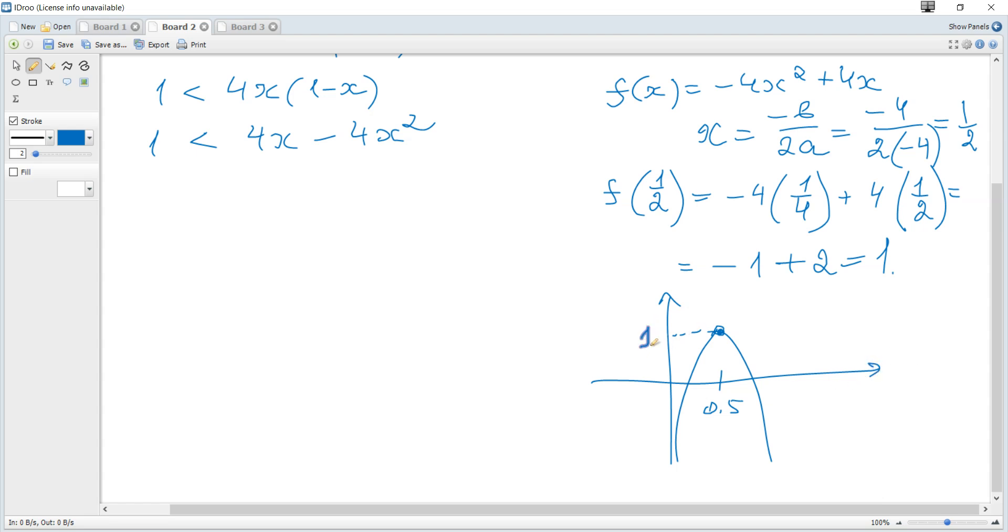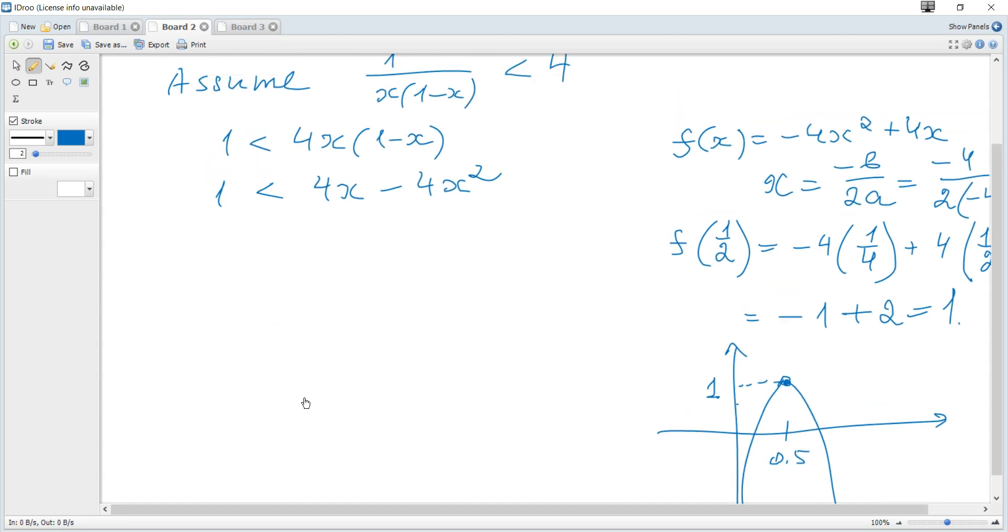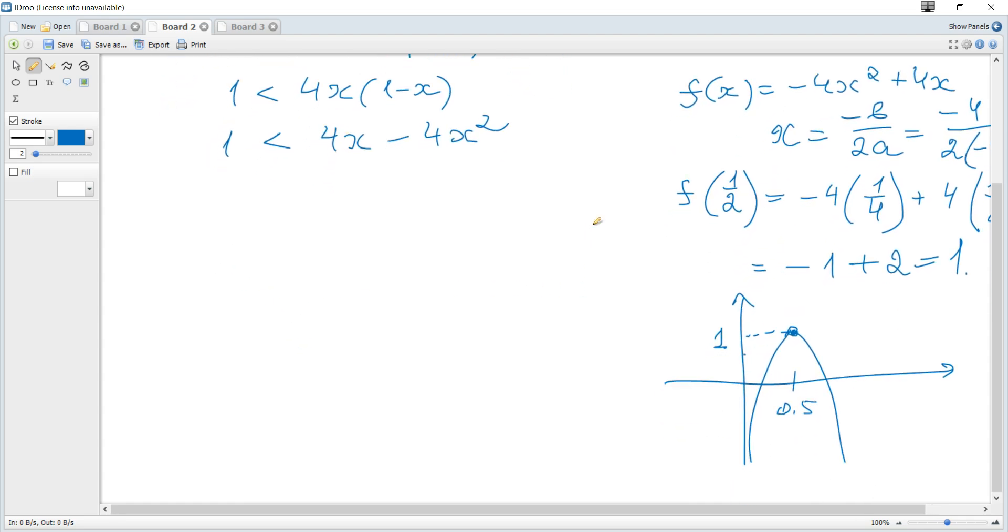It's a concave down parabola, so the range of 4x - 4x² is y ≤ 1.